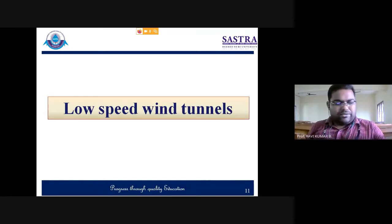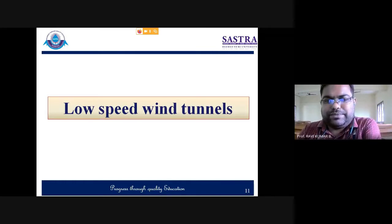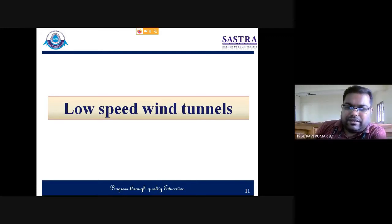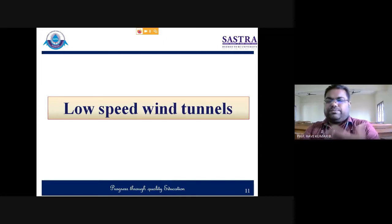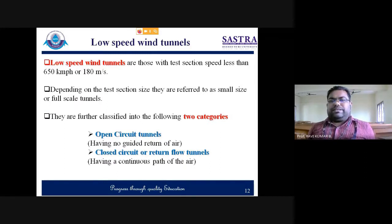Today we start with the low speed wind tunnel. There are two kinds — high speed and low speed. Any wind tunnel with a test section velocity less than 0.9 Mach number will be considered low speed; if it crosses that, it is a high speed wind tunnel. High speed wind tunnels include transonic, supersonic, and hypersonic tunnels. Special purpose tunnels also exist. Low speed wind tunnels are those with test section speeds less than 650 kilometers per hour or 180 meters per second, and depending on test section size they are referred to as small or full-scale tunnels.